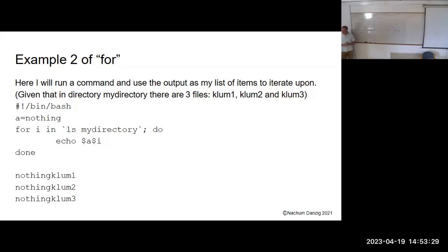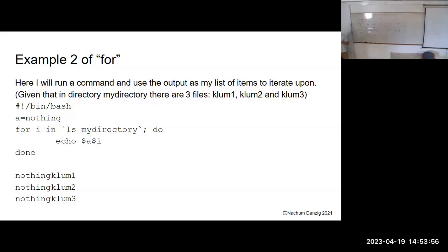Here we're using backticks, which we talked about before. Normally I would say 'for i in A B C', but here I can say 'for i in' and then take the output of the command 'ls my_directory'. Without backticks I'd be iterating over the literal strings 'ls' and 'my_directory'. With backticks, I get whatever the result of running 'ls my_directory' is — maybe 25 files — and I iterate over each one. The dollar sign means it's a variable.